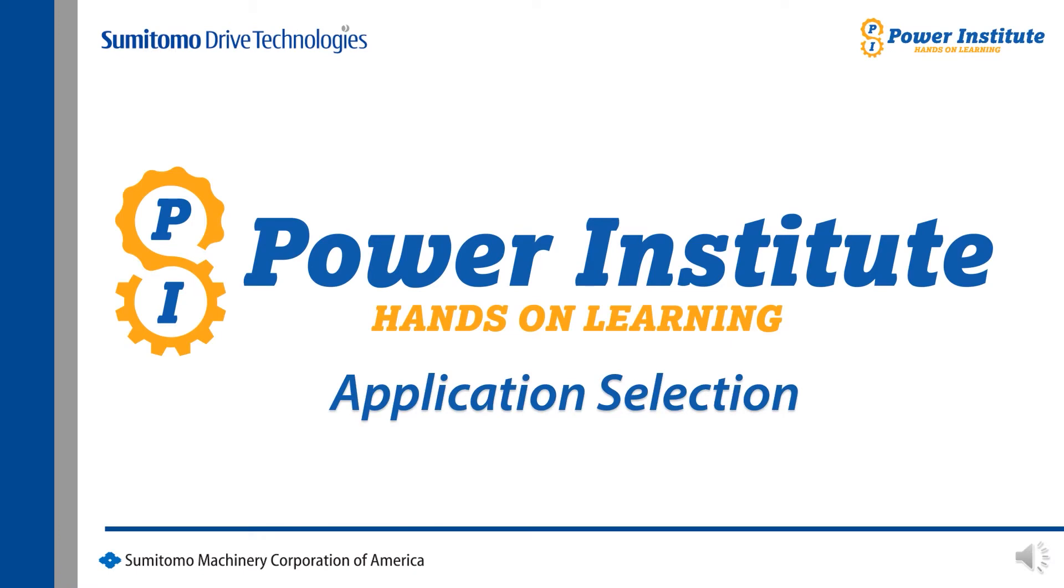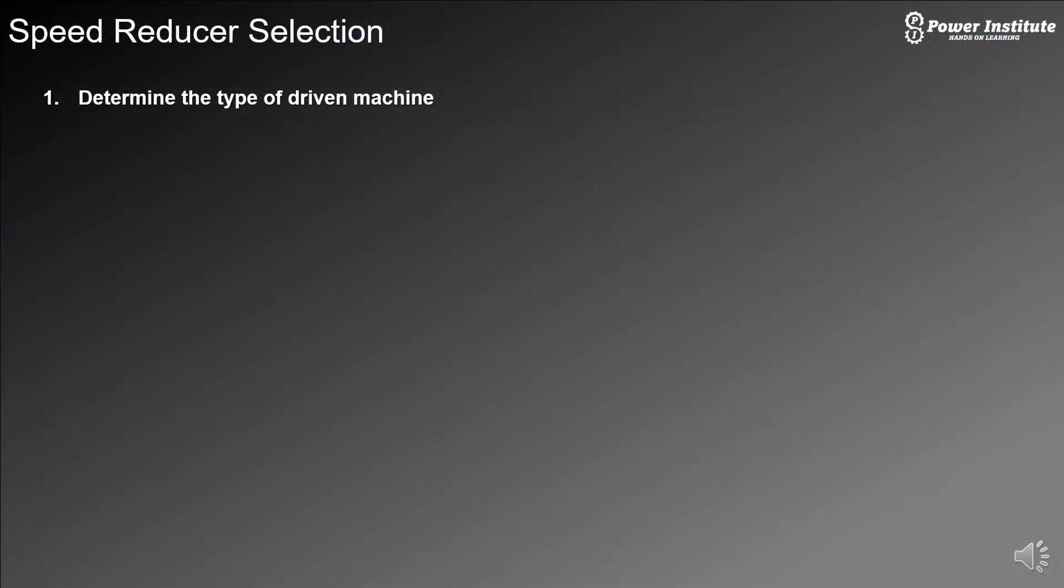Okay, so the first lesson will be application selection. When determining the type of selection you need to make, you need to look at the machine itself.